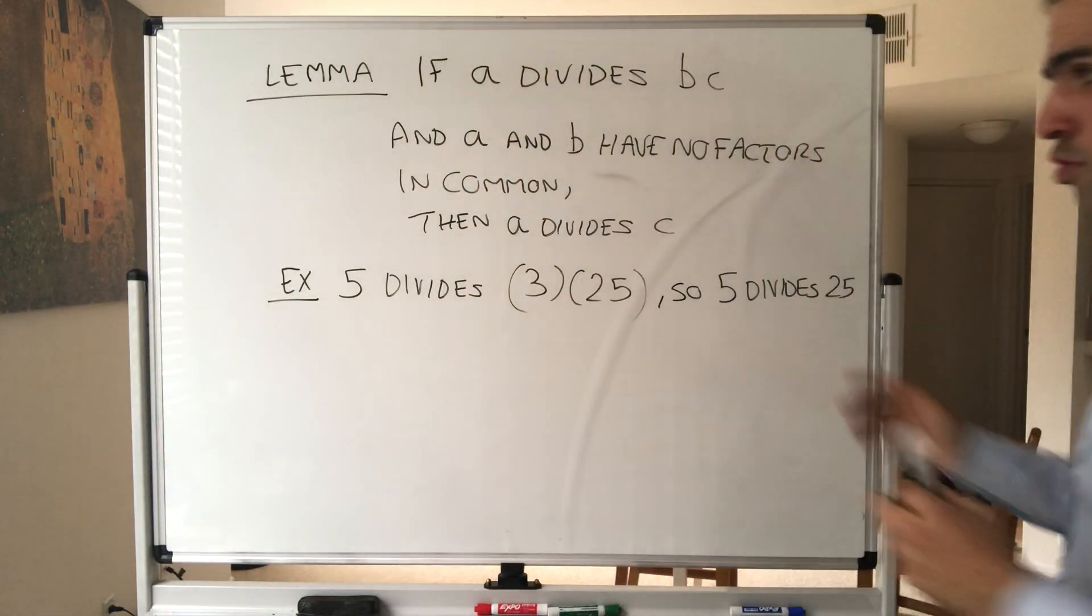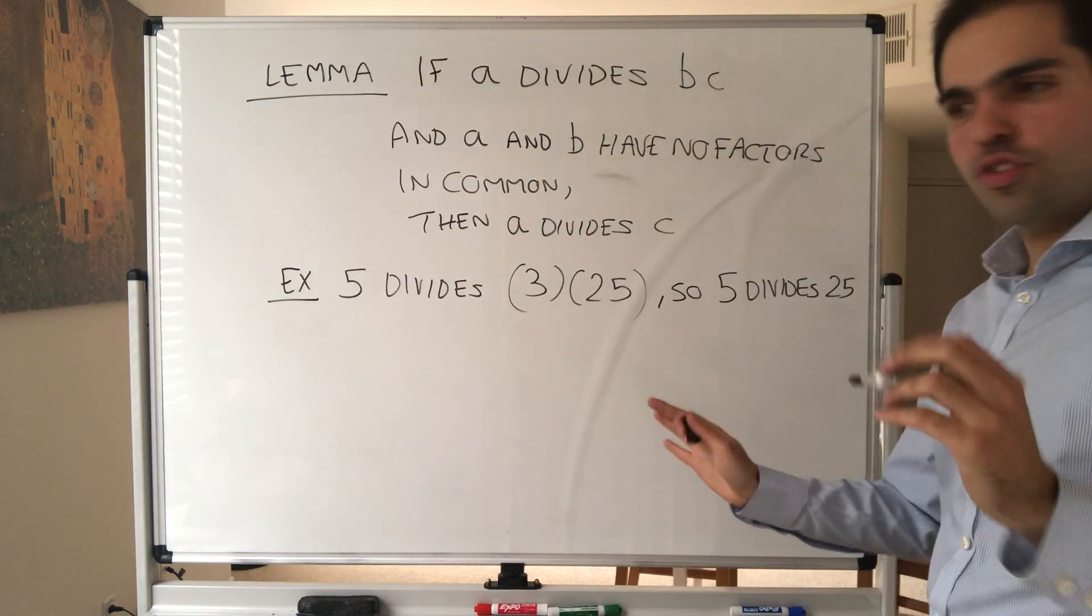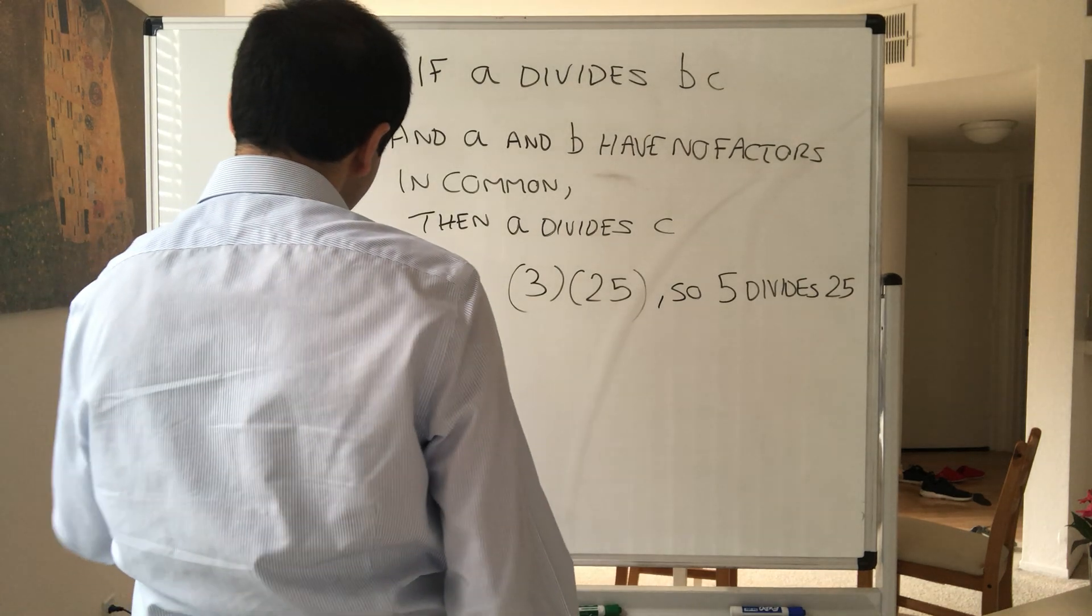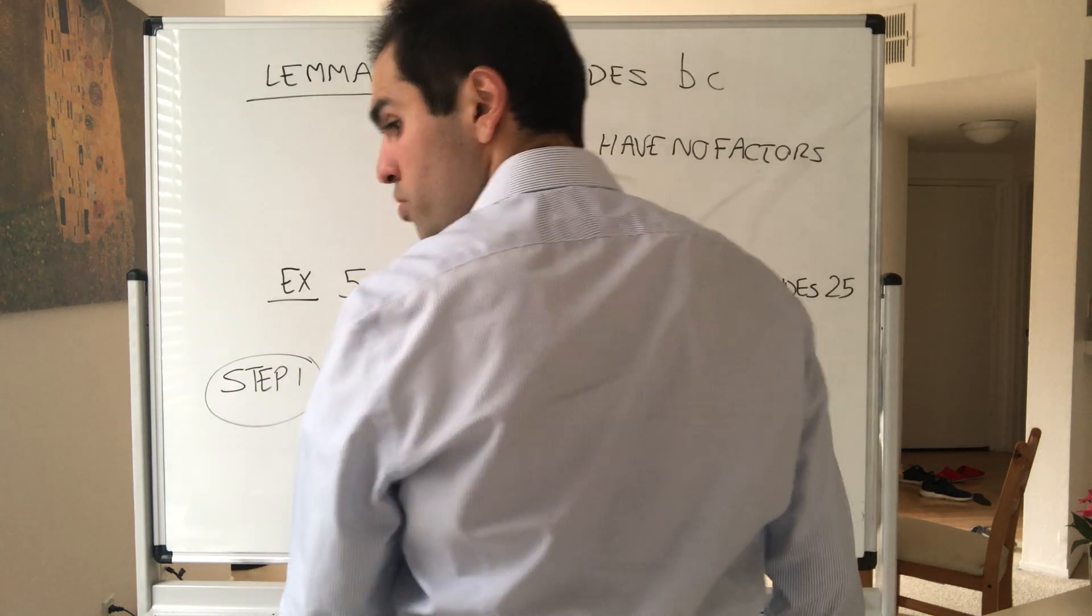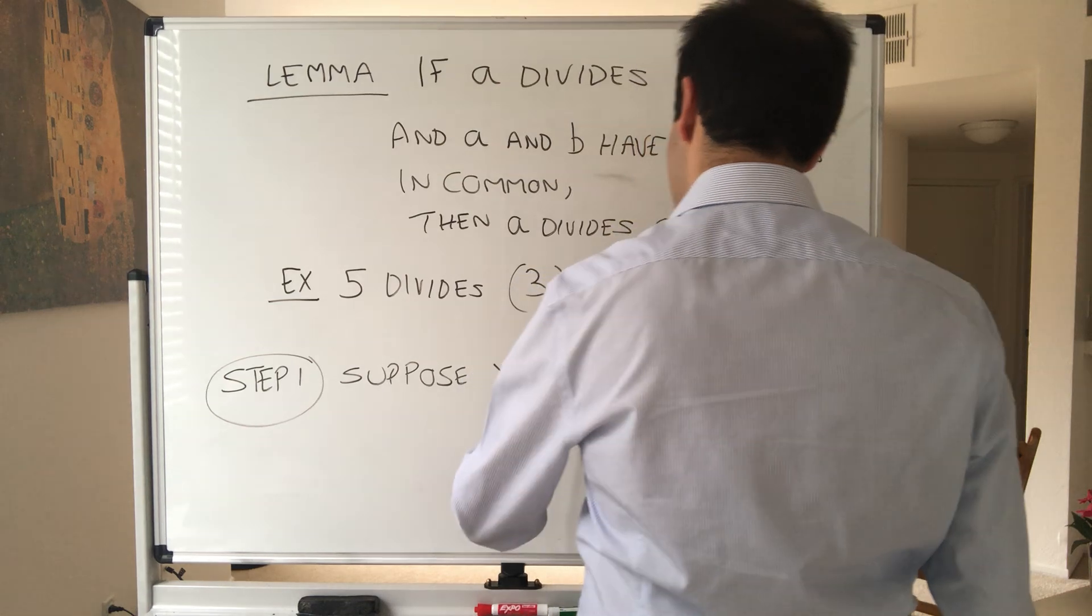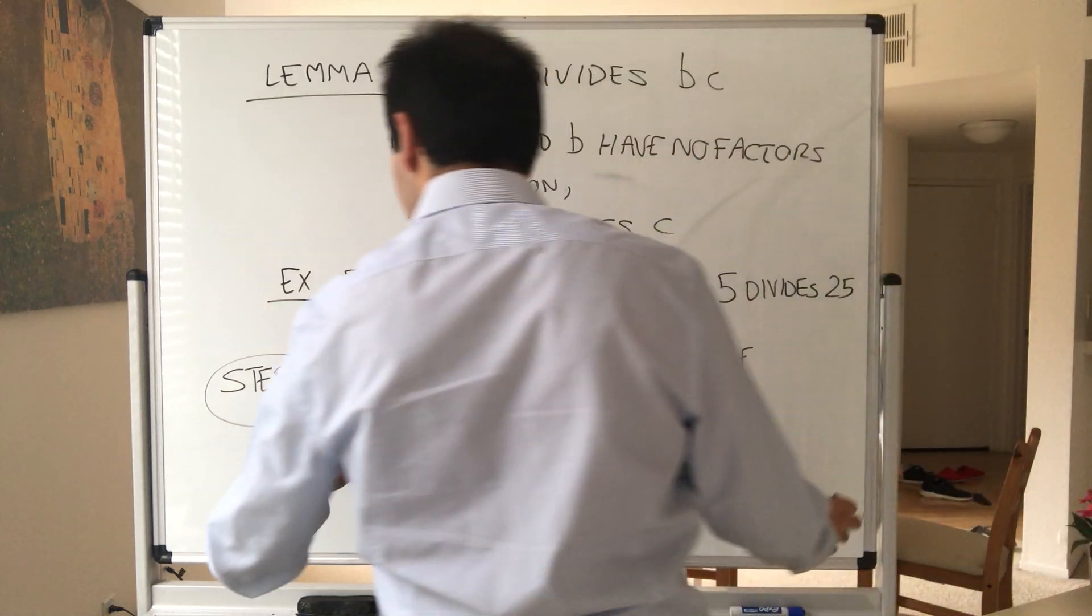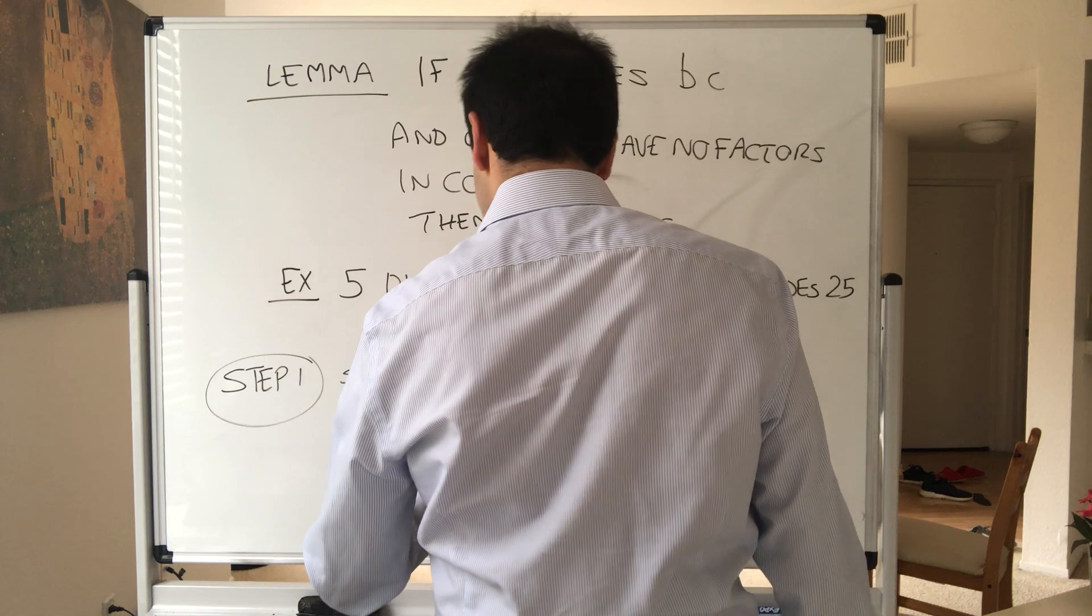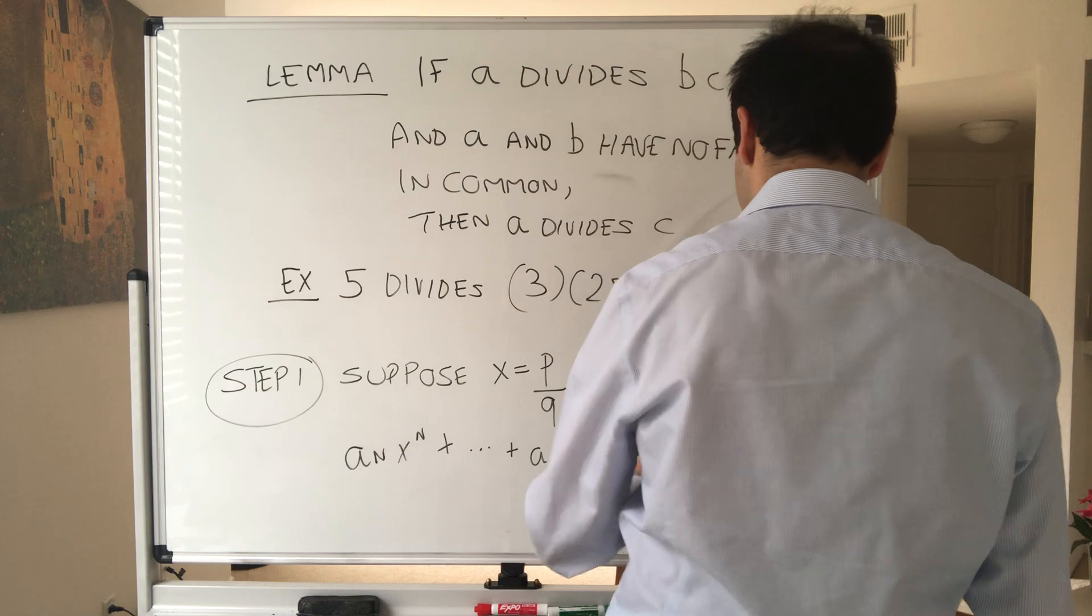Hopefully that makes sense, at least mind-wise. And now let's use that to prove the rational roots theorem. So in other words, the rest is just a little bit of algebra. So suppose X is a root of a_n X^n plus etc. plus a_1 X plus a_0 equals 0.